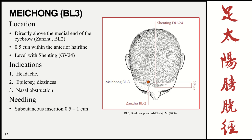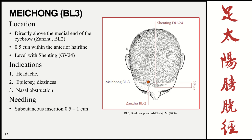We're going to be carrying on with the bladder meridian today. If you remember from last week we did up to bladder 3, which was on the anterior hairline, so let's move on. As you can see on my slide, we're going to be doing the points on the cranium. There's a good method to find all five points going from bladder 4, bladder 5, bladder 6, bladder 7, and bladder 8.